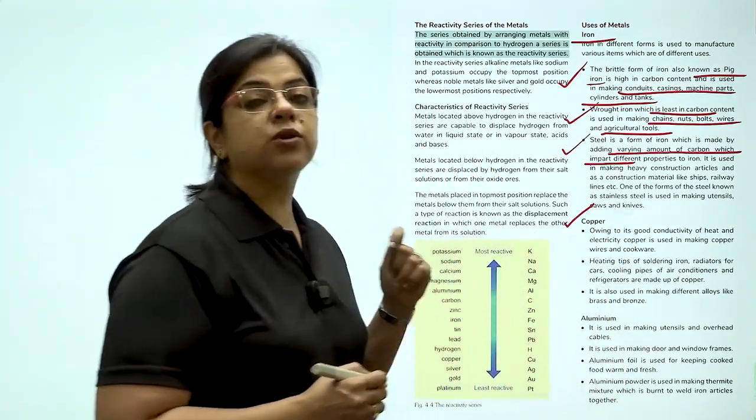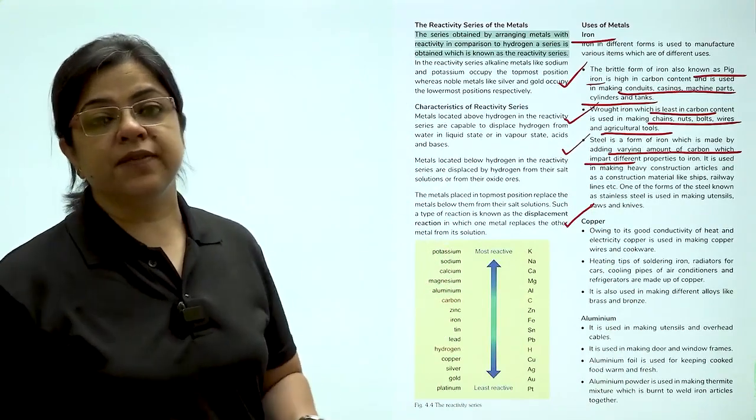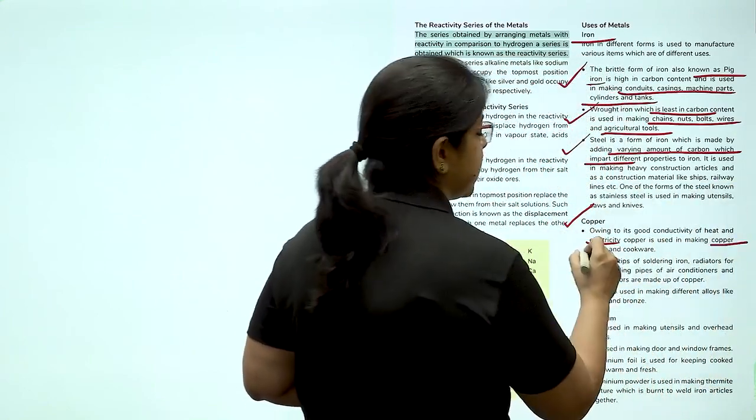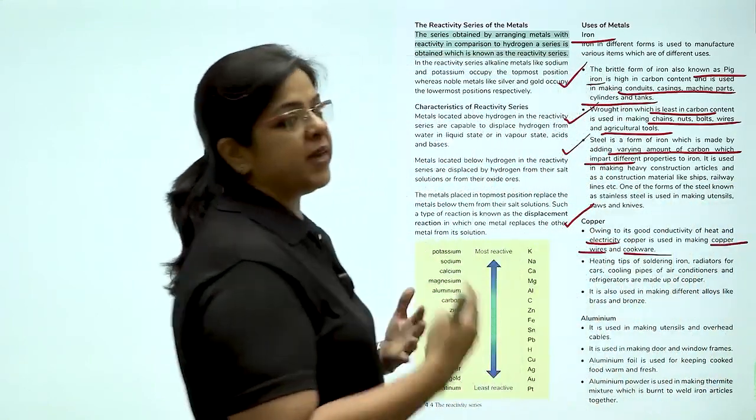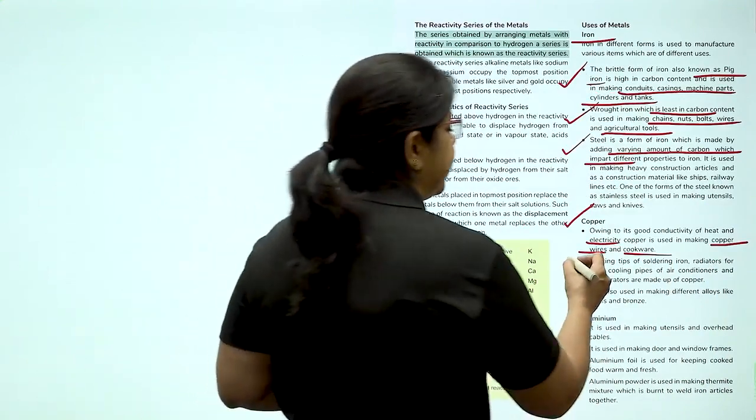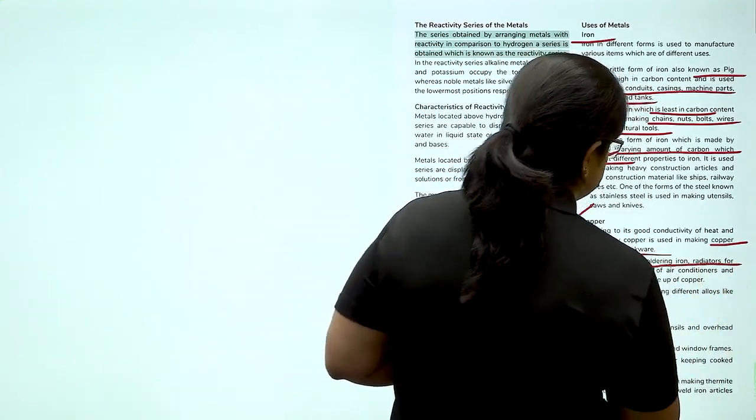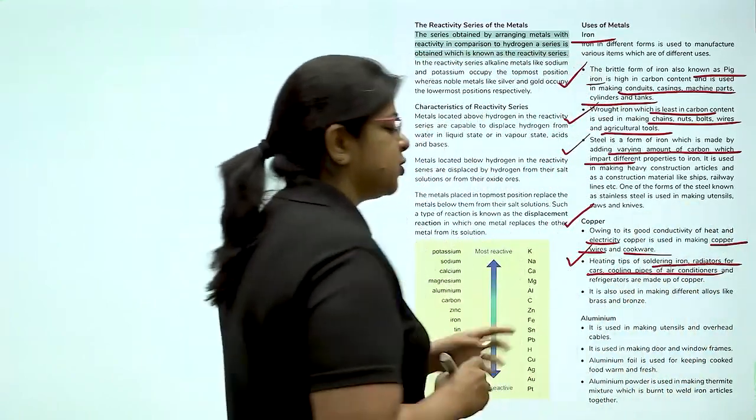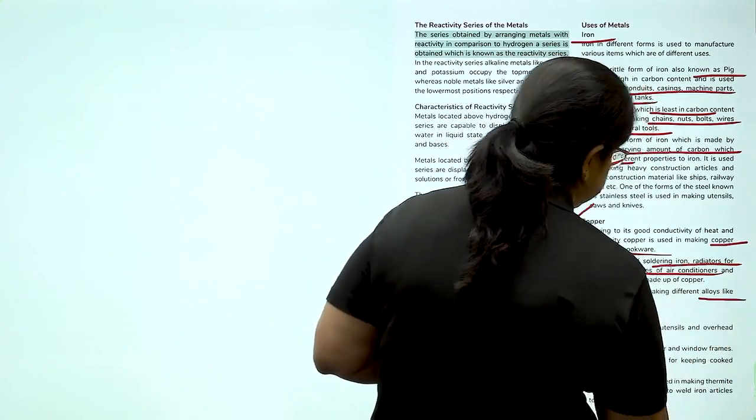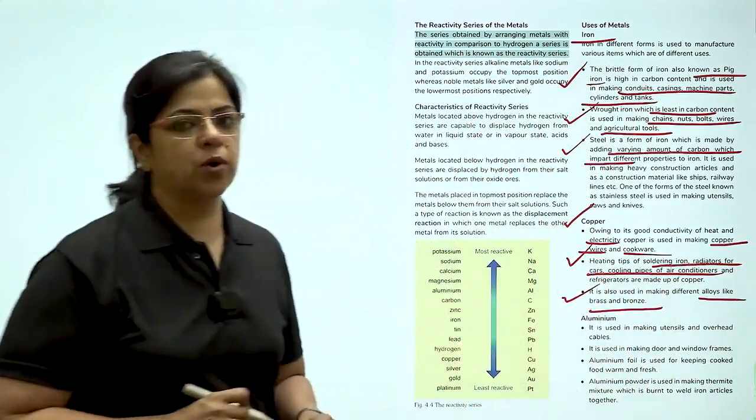Coming next to copper. Copper is a very good conductor. When something is a very good conductor of electricity, it is going to be used in making copper wires. And because it is a good conductor of heat, it is going to be used in making cookware. Heating tips of soldering iron radiators for cars, cooling pipes of air conditioners are all made up of copper. It is used in making different alloys like brass and bronze.